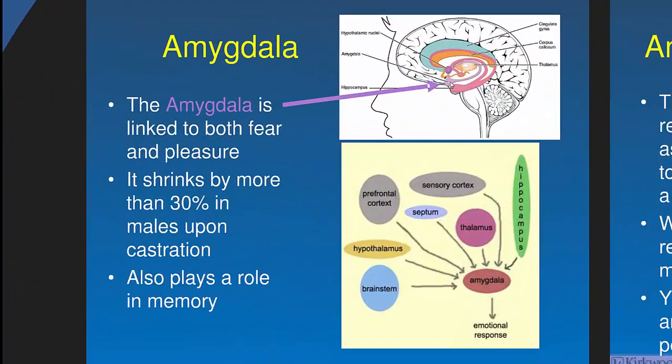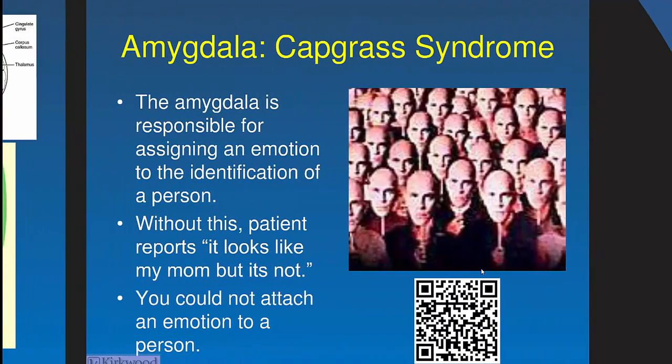The amygdala is the center of fear and anger, weighing emotional responses. It plays a role in memory — traumatic events are remembered vividly. It shrinks with castration, consistent with reduced emotionality. In Capgras syndrome, damage to the amygdala means a person can visually identify someone (like their mother) but doesn't feel the expected emotional response — so they conclude the person must be an imposter. This shows the amygdala backs up identification by pairing it with an emotional response.